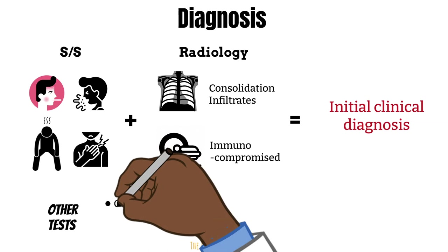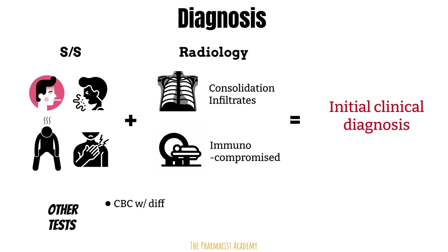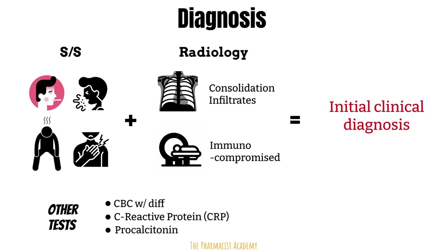A CBC with differential will help assess the white blood cell counts, which should be elevated in the setting of an infection. Next is the C-reactive protein, an acute phase inflammatory marker that rises when there is inflammation. It doesn't really drive decisions to begin therapy, but it's useful to monitor after starting antibiotics, as we expect it to drop if the antibiotics are working. We also have procalcitonin, a biomarker released in response to bacterial respiratory infections that can help differentiate the etiology of infections — viral versus bacterial. It's been shown in some studies to reduce unnecessary antibiotic use, and similar to CRP, its use is more validated for monitoring levels after antibiotics are started.